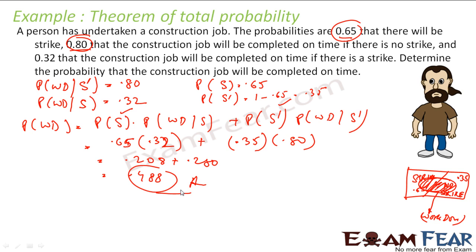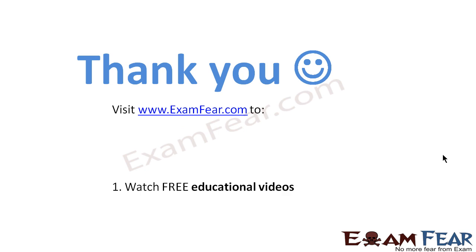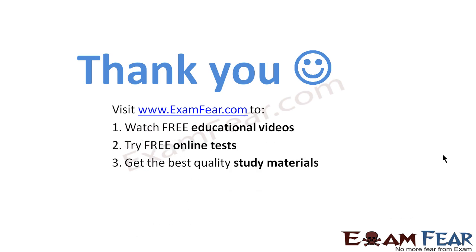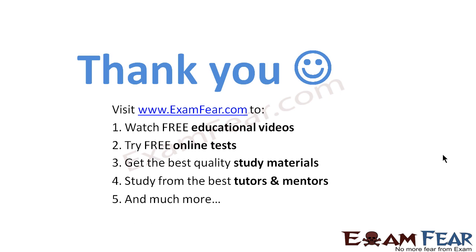So the key understanding is that the work done depends on various factors — in this example, strike and non-strike. The probability of work done on time differs depending on whether there is a strike or not. I divided the whole sample space into those two events — strike at 65% and non-strike at 35% — applied the formula, and got the answer. This is the application of the theorem of total probability. Visit examfear.com to watch free educational videos, try free online tests, get the best quality study materials, and study from the best tutors and mentors. Thanks once again.